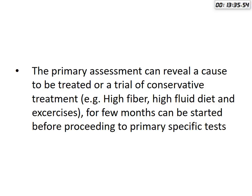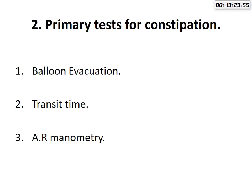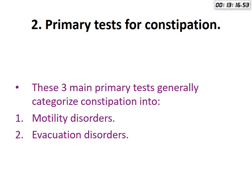The primary assessment can reveal a cause to be treated, with a trial of conservative treatment with high fiber diet and exercise for a few months to be started before proceeding to specific tests. The primary tests for constipation include balloon evacuation, colonic transit time, and anorectal manometry.